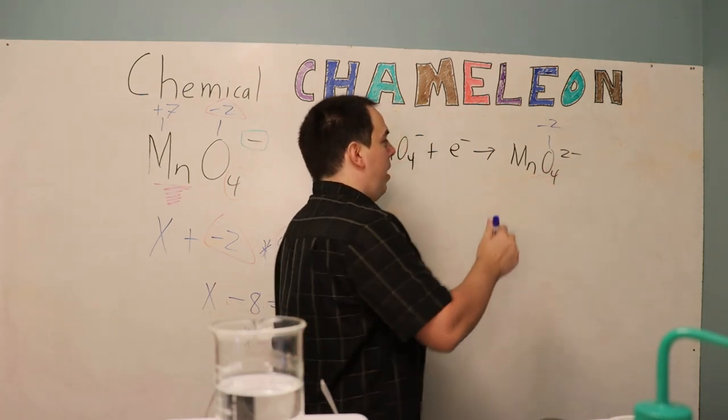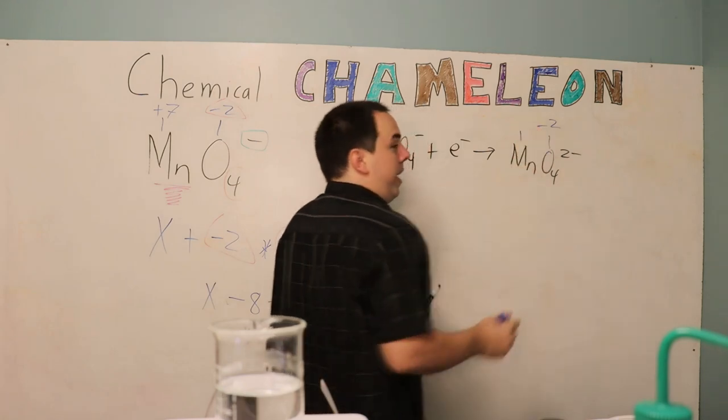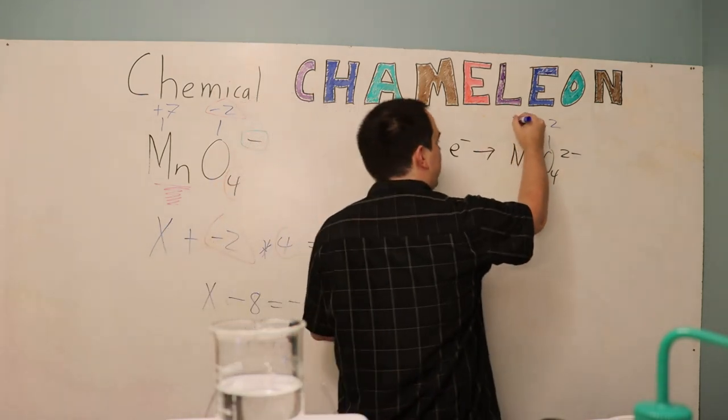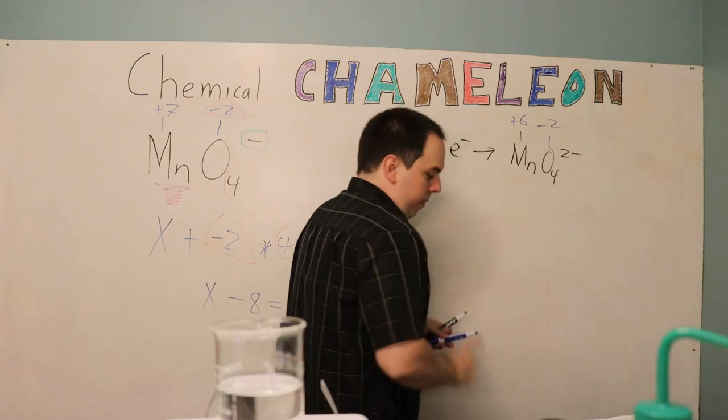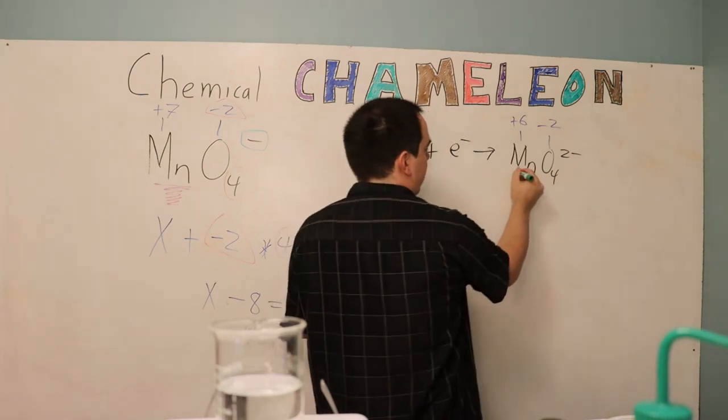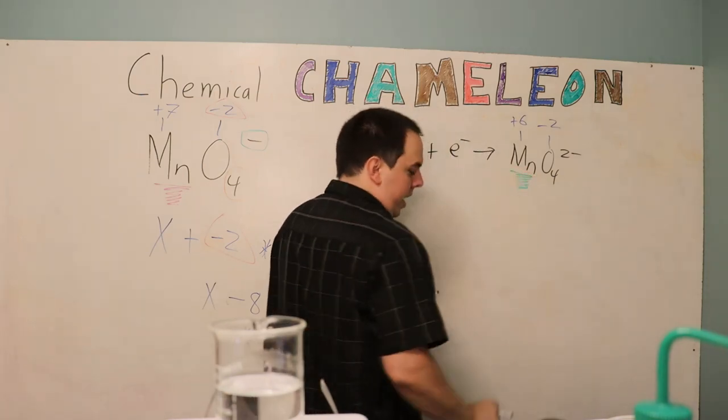And so that's going to make the oxidation state of our manganese, you got it, 1 less. So that's going to be positive 6. And so when manganese is in a positive 6 oxidation state it has a green appearance.